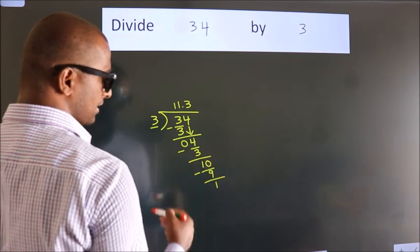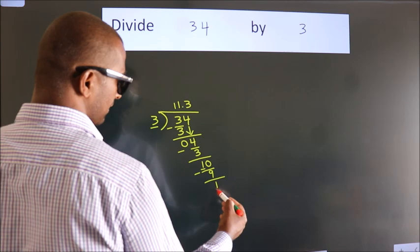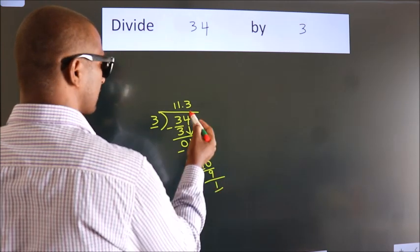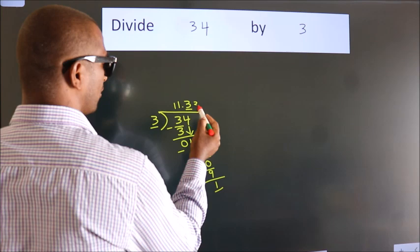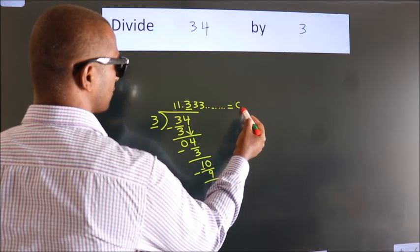Now you observe. We had 1 here. And we got 1 again. That means this number keep on repeating. So this is our quotient.